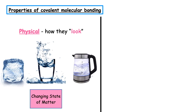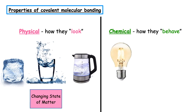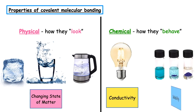Is it a solid? Is it a liquid? Or is it a gas? We then focus on the chemical properties — that's how an element or compound behaves. The two experiments we can do to identify how a substance behaves are looking at conductivity and looking at solubility.